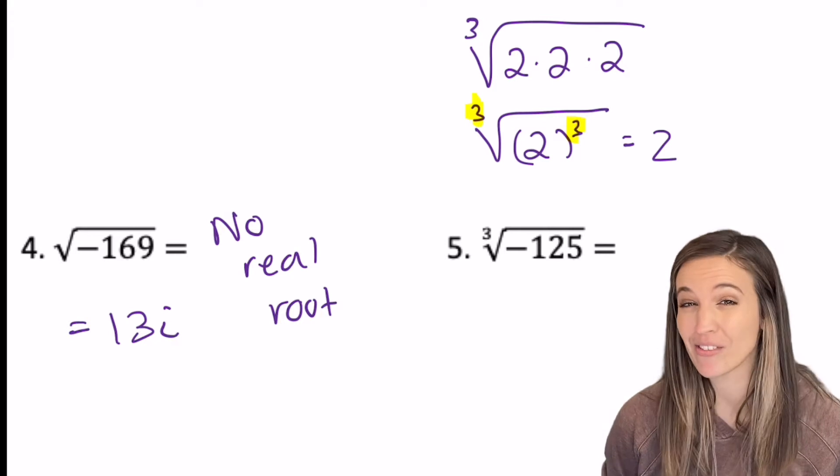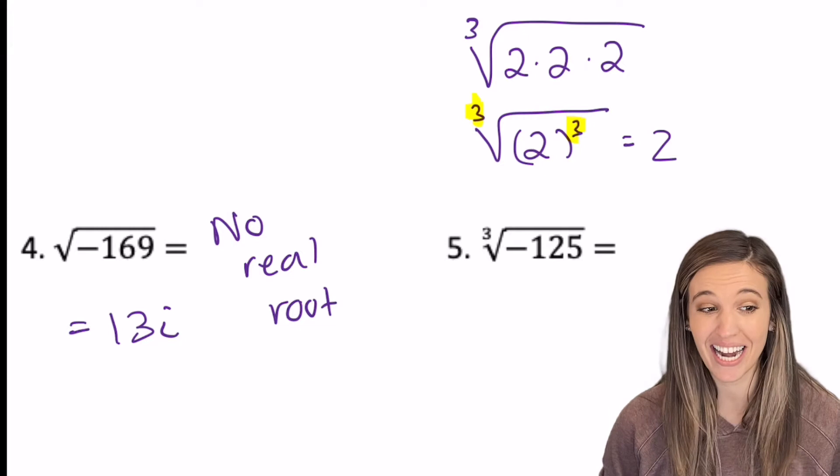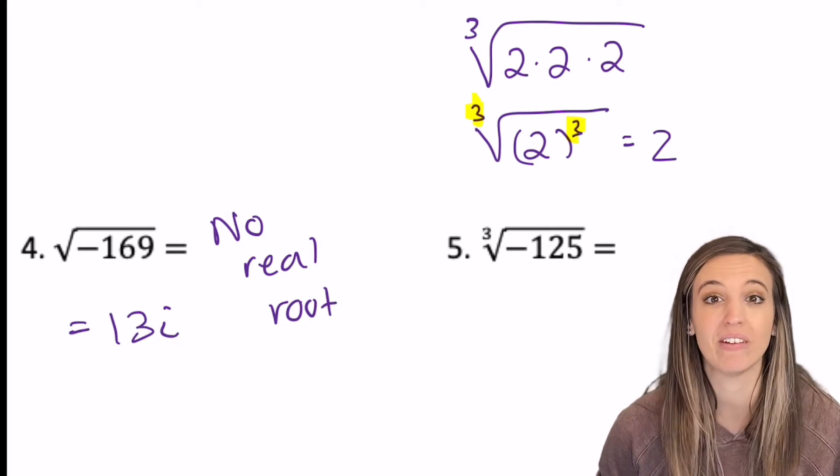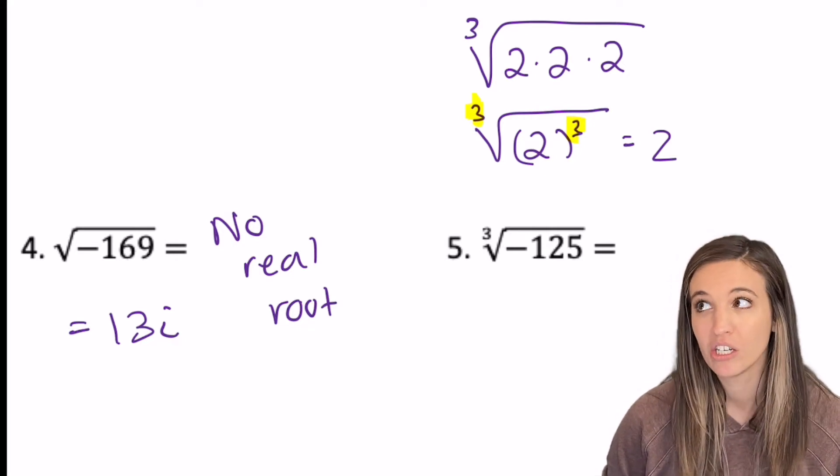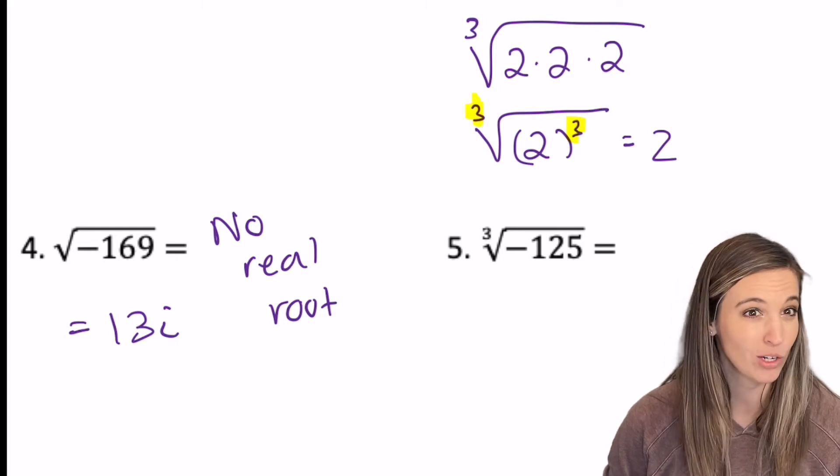Now in the next one, I have the cube root of negative 125. Well, be careful here. Can I take the cube root of a negative and still have a real root? Do three negative numbers multiply to negative 125?